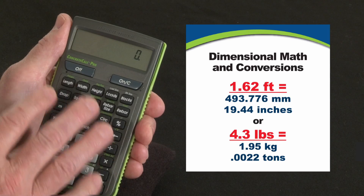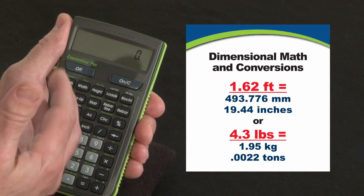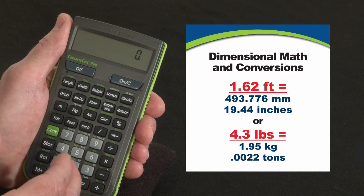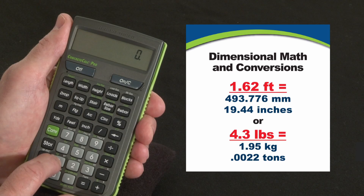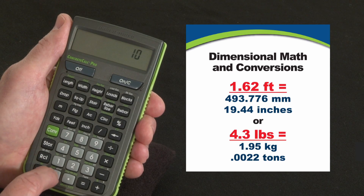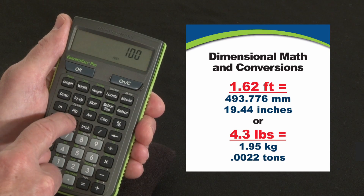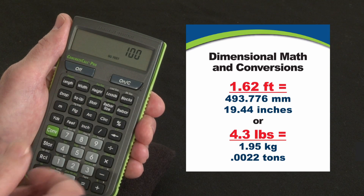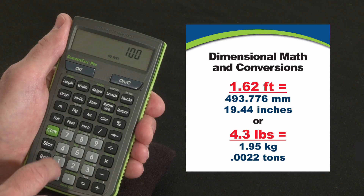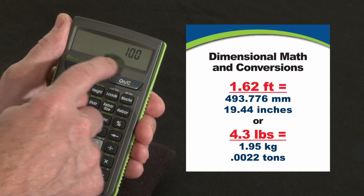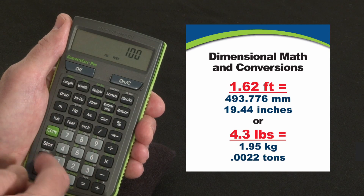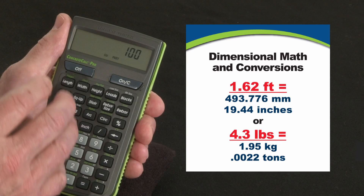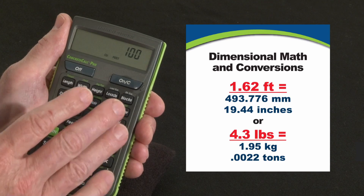Another way you can enter square and cubic values is to enter them directly. If you've got a 10 by 10 foot pad, you don't need to calculate it — you know it's 100 square feet. So go 100 feet, feet — see right there, it says square feet. If you already know the cubic volume of something, hit it again — 100 cubic feet. You can enter cubic yards, cubic inches, anything directly.